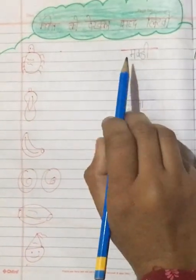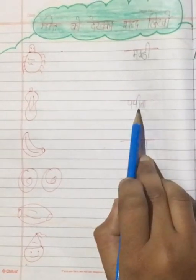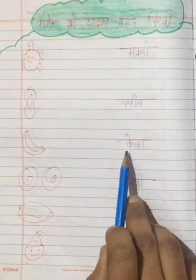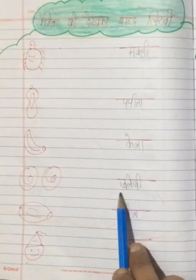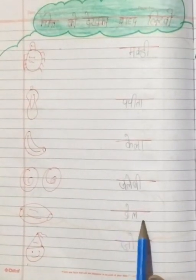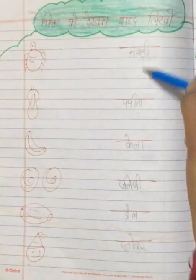So write down makdi spelling students. M-A-K-D-I, makdi. P-A-P-I-T-A, papita. K-E-L-A, kela. J-A-L-E-B-I, jalebi. D-O-L, dol. J-O-K-A-R, jokar. Okay students, do same in your Hindi notebook and also learn these words.